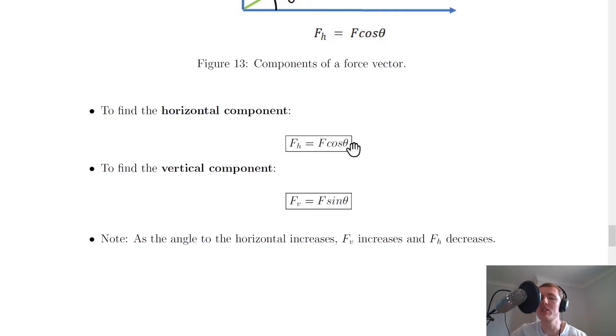For the horizontal component, F_H = F cos θ, and for the vertical component, F_V = F sin θ. Remember: horizontal uses cosine, vertical uses sine.